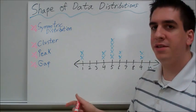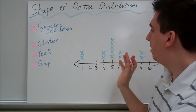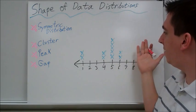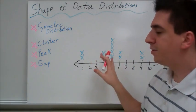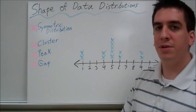Symmetric distribution means that your graph looks the same on the left as it does on the right. So let's look at this one. If I split this down the middle, this looks the same on the left as it does on the right. So we would say that this graph in particular has symmetric distribution.